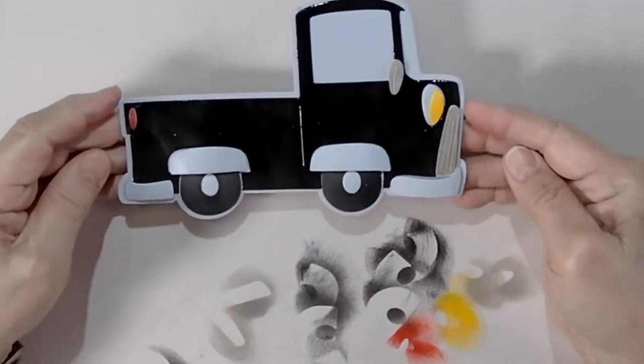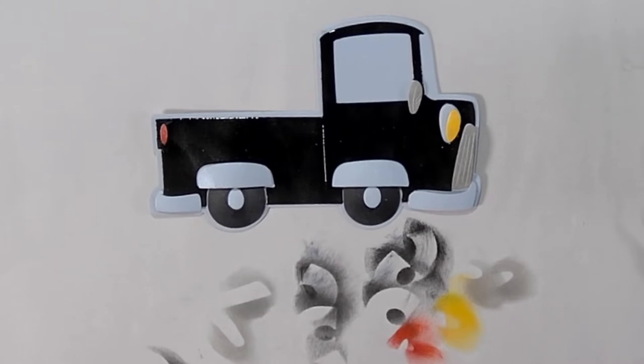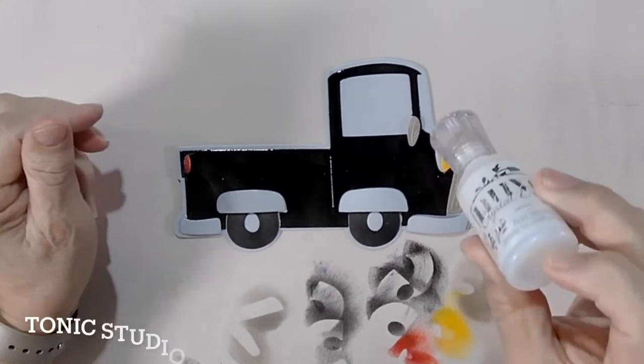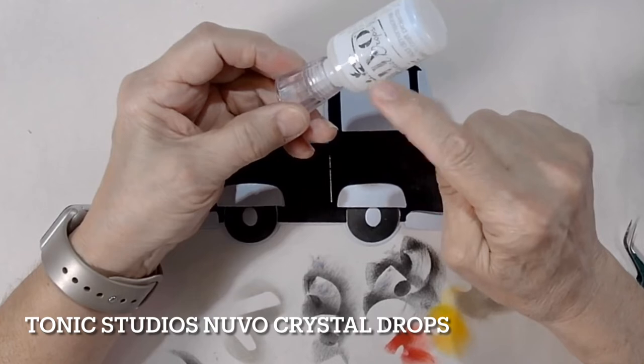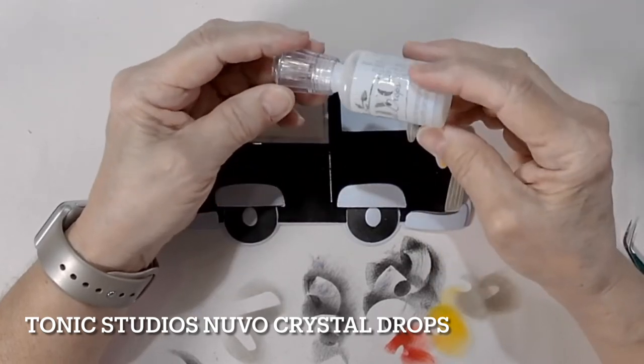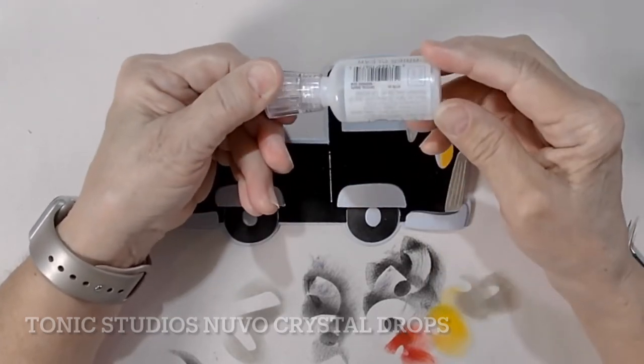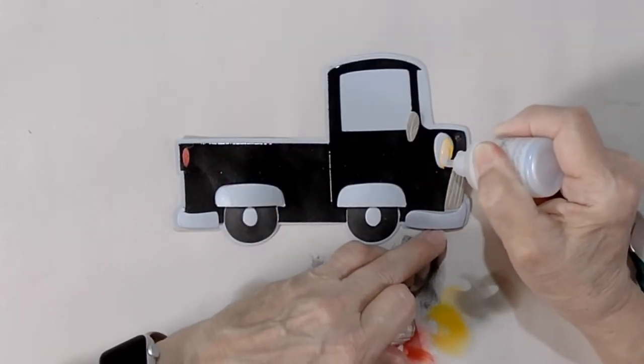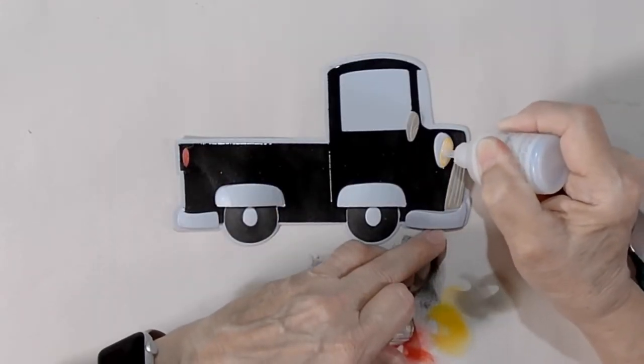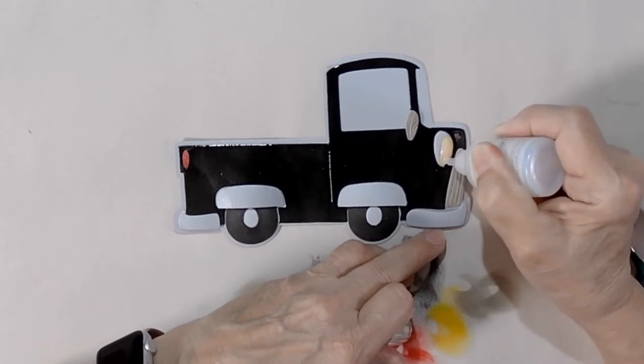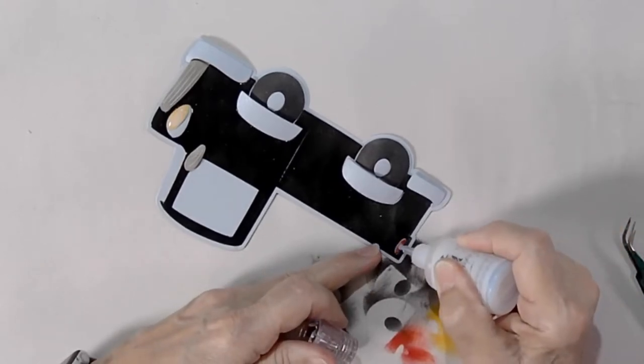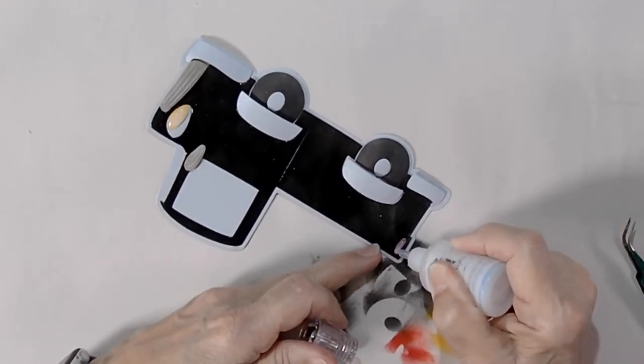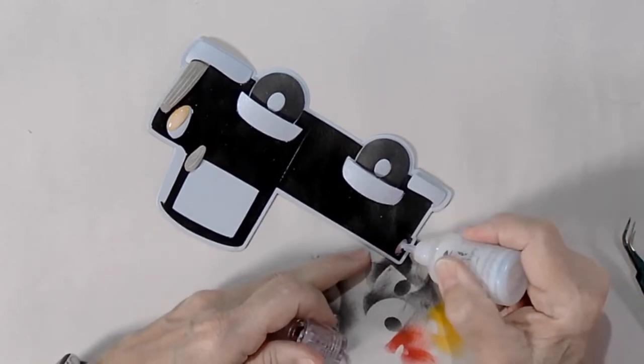Now the other thing that you can do to just add a little more realism because why not? And I hope I have enough because I may be out. It's another one of my favorite products, Nuvo and it is their crystal drops and this one I think it's called meadow something. It dries clear and gives that shiny look to the headlight and to the tail light and guess what? Adds another layer of dimension. Oh what fun.